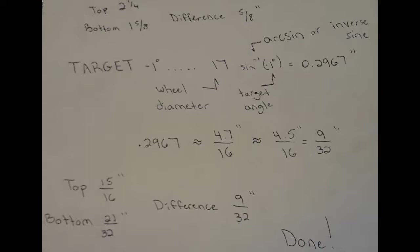So take your wheel diameter—in my case 17 inches—and multiply this by the inverse or arc sine of your target angle, negative one degree. Make sure you're using degrees mode on your calculator, or I used Wolfram Alpha, it's sort of an online calculator search engine, works great. This came out with the result of 0.2967 inches, and 0.2967 is about 4.7 sixteenths of an inch, which is pretty close to 4.5 sixteenths, which would be 9/32nds, and that's kind of what I'm looking for.